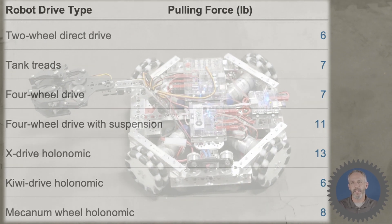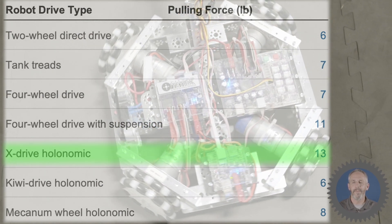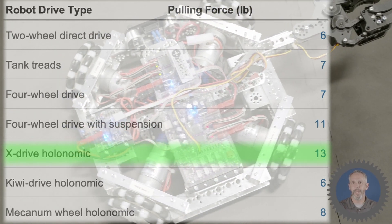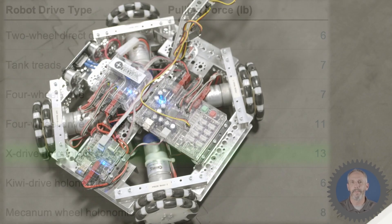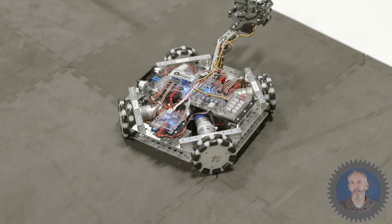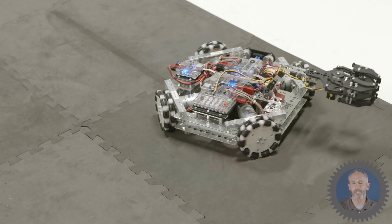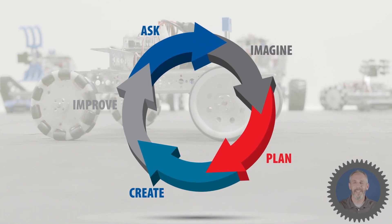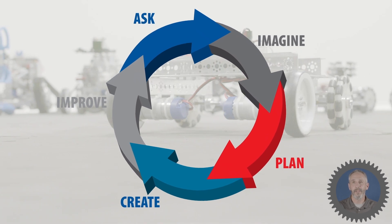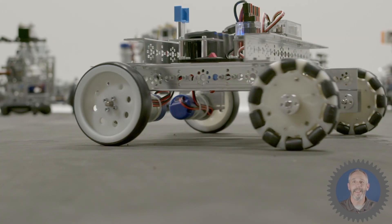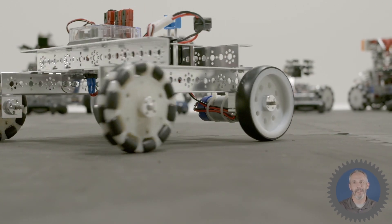Here are the final results of our experiment. The X-drive holonomic robot achieved the highest pulling force, but remember — with pulling force there are several engineering trade-offs to consider, including speed and maneuverability. Think about these trade-offs when choosing your drive system so that you can meet the goals of your competition or challenge. Then use the engineering design process to modify and improve your robot until your drive system functions the way you want. As always, remember to have fun, build some robots, and we'll see you next time.